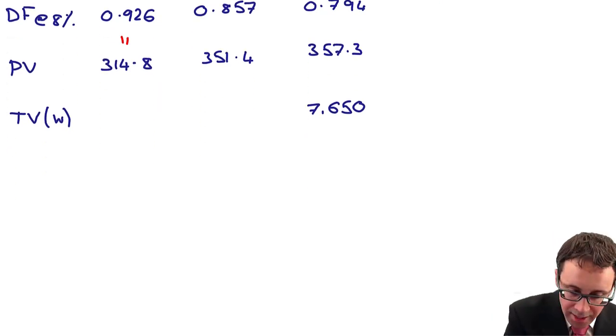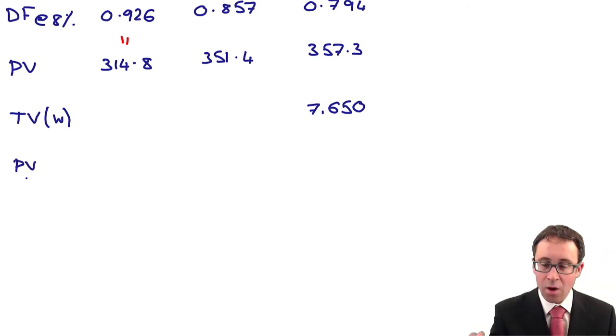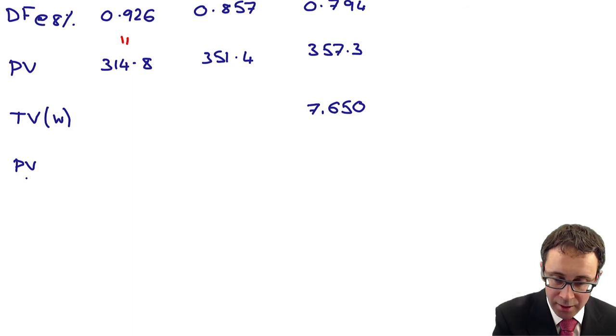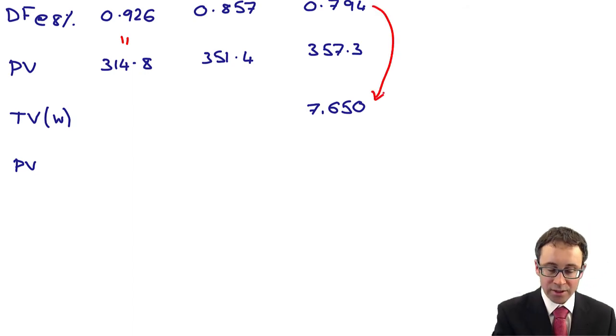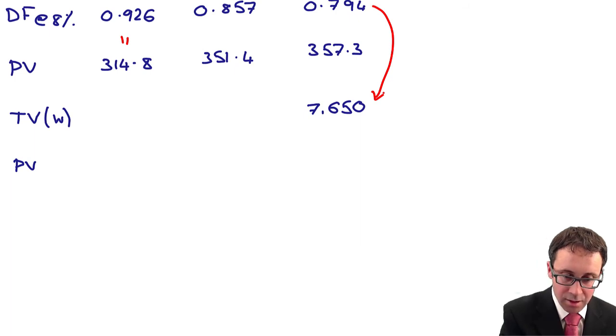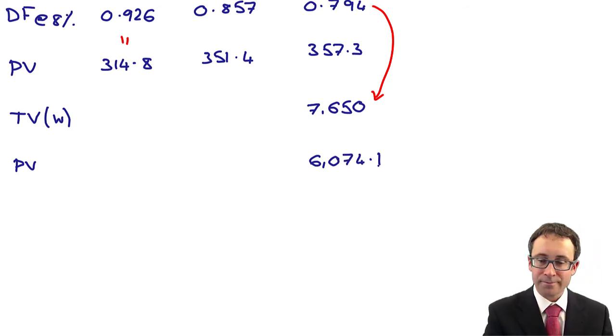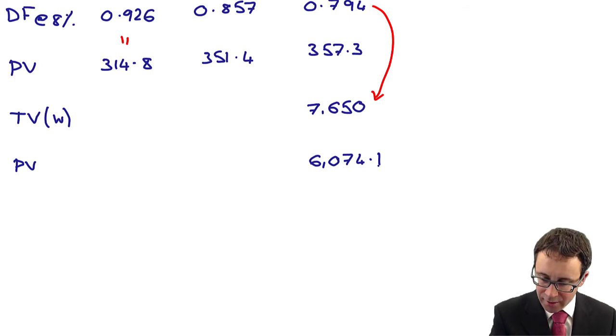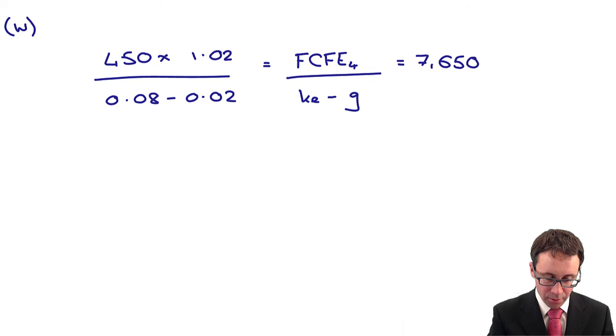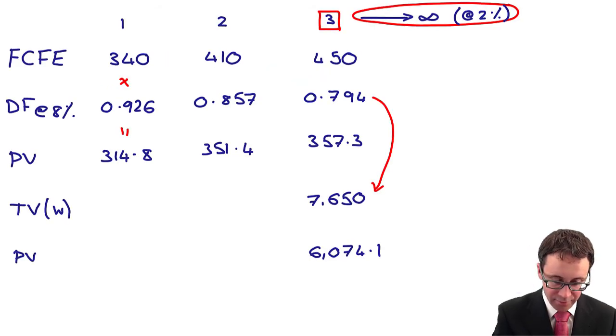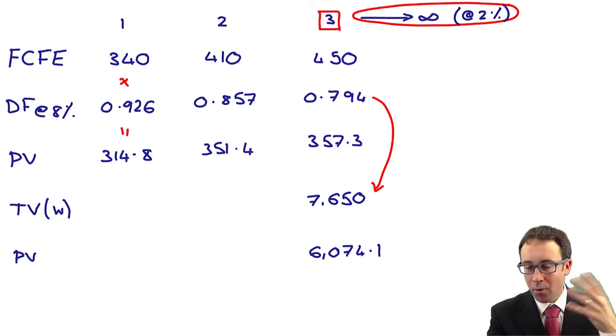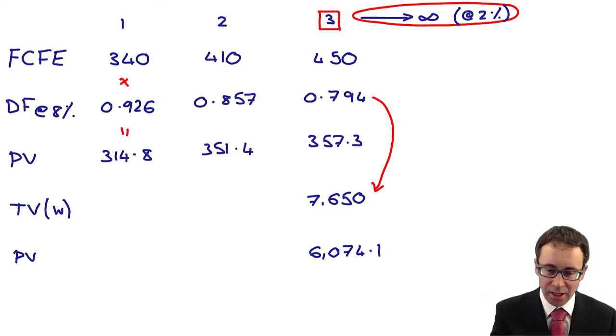To work out its present value, what we need to do is multiply by 0.794. That gives me 6074.1. Let's just double check that we have our numbers correct. 450 times by 1.02 divided by... gives 7650 multiplied by 0.794, which gives me 6074.1. Any numerical differences are likely to be in terms of rounding.